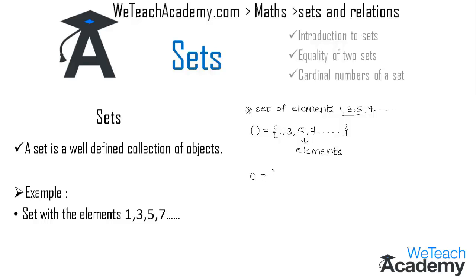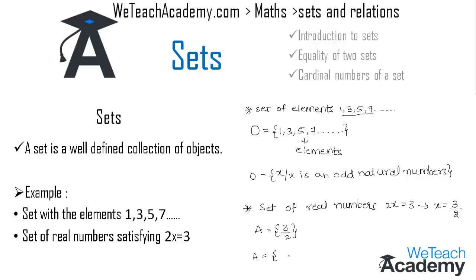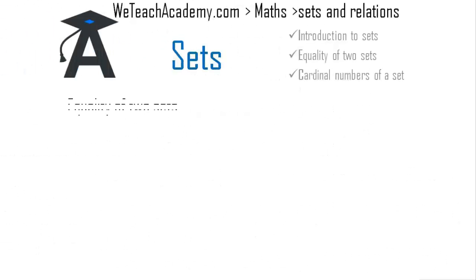We can write this in set-builder form as {x | x is an odd natural number}. In the set-builder form, x represents what is common to all elements of the set. For the second example, we have a set of real numbers satisfying the condition 2x = 3. Transferring 2 to the other side, we get x = 3/2. So the element of set A is 3/2, and in set-builder form: {x | 2x = 3, where x is a real number}.